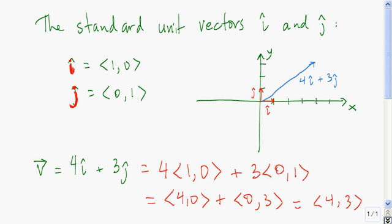We notice a pattern here. It's no surprise that we had to go 4 units in the x-direction and 3 units up in the y-direction, because the coefficient or the scalar that you're multiplying i by is 4, the scalar that you're multiplying j by is 3.